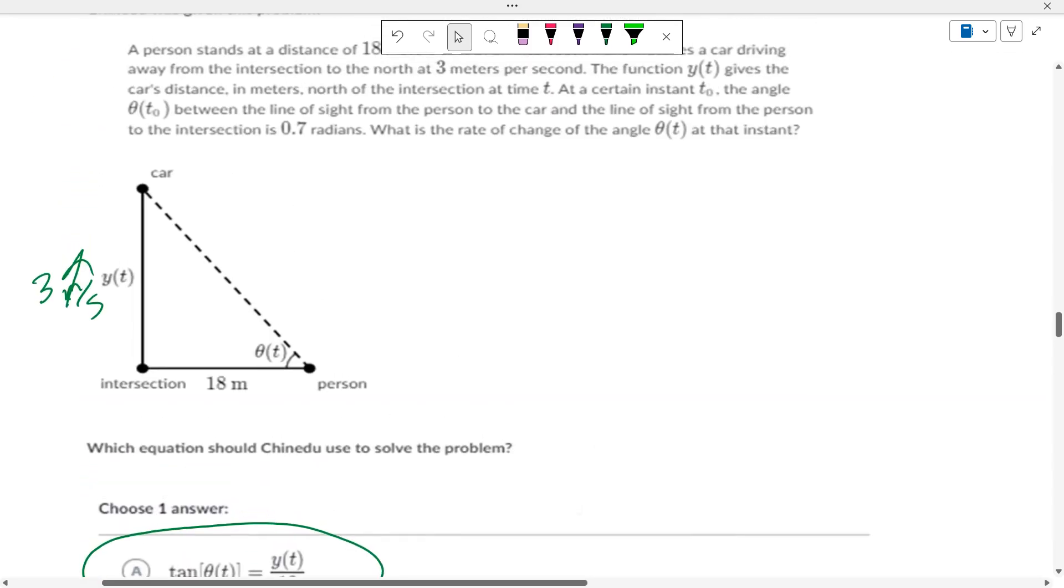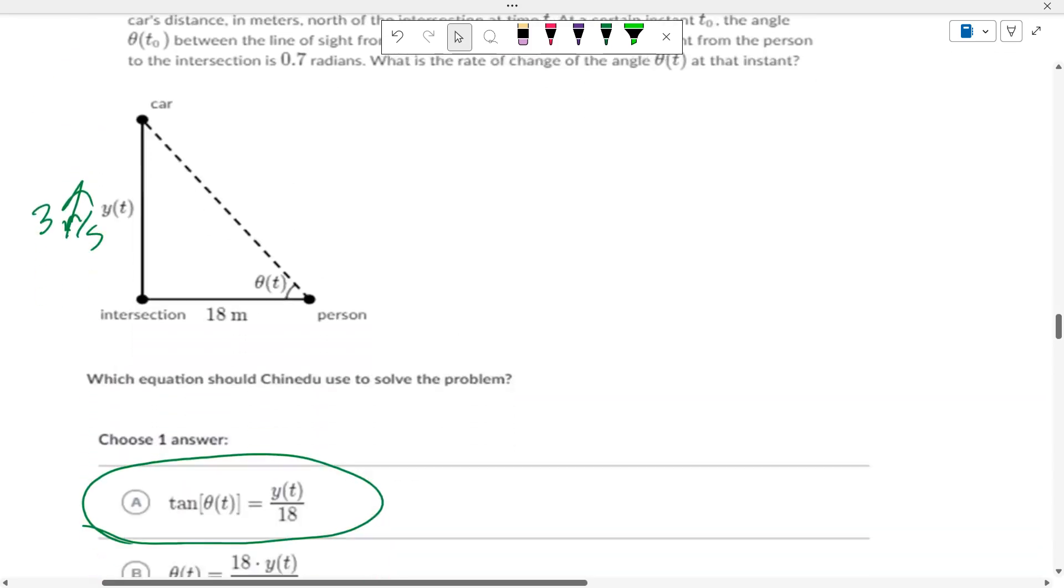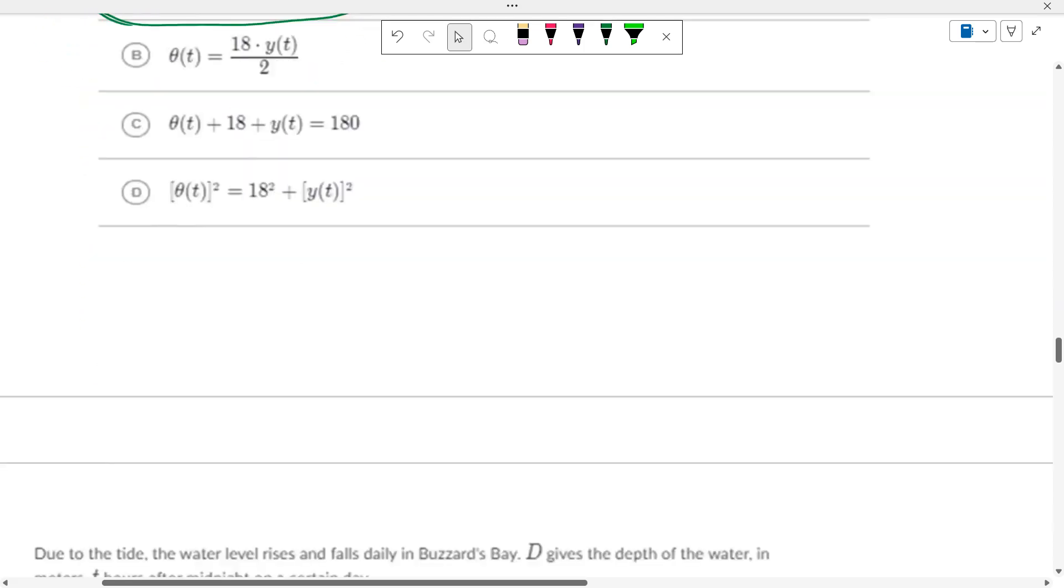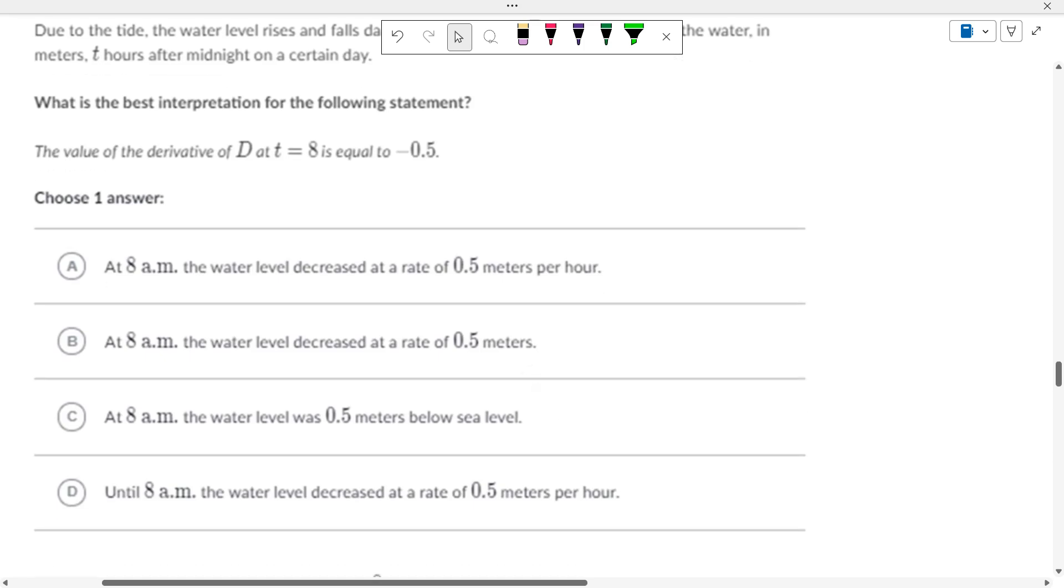This is the only one with an angle, the tangent. Tangent is opposite over adjacent. When you talk about angles, it has to be that one. If it's distance, it's the Pythagorean theorem.